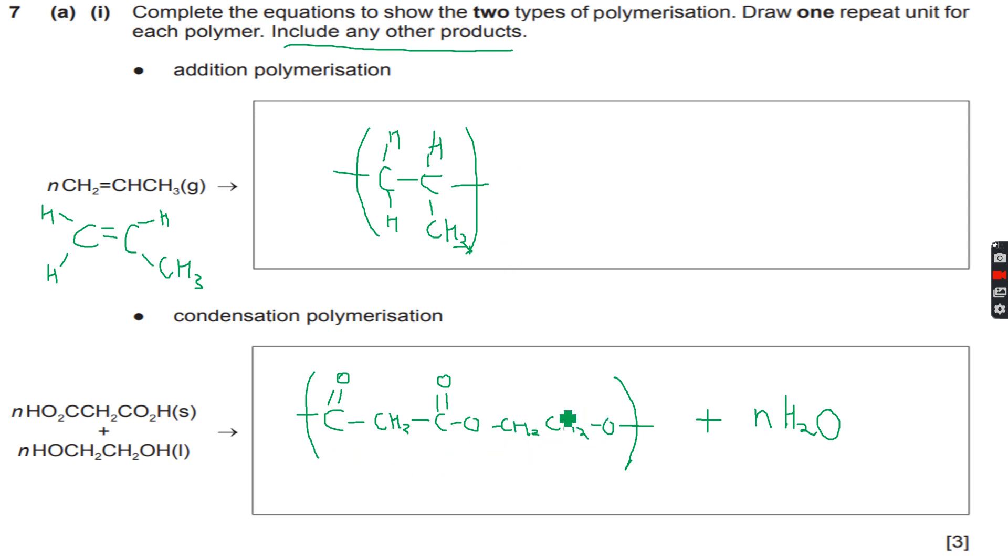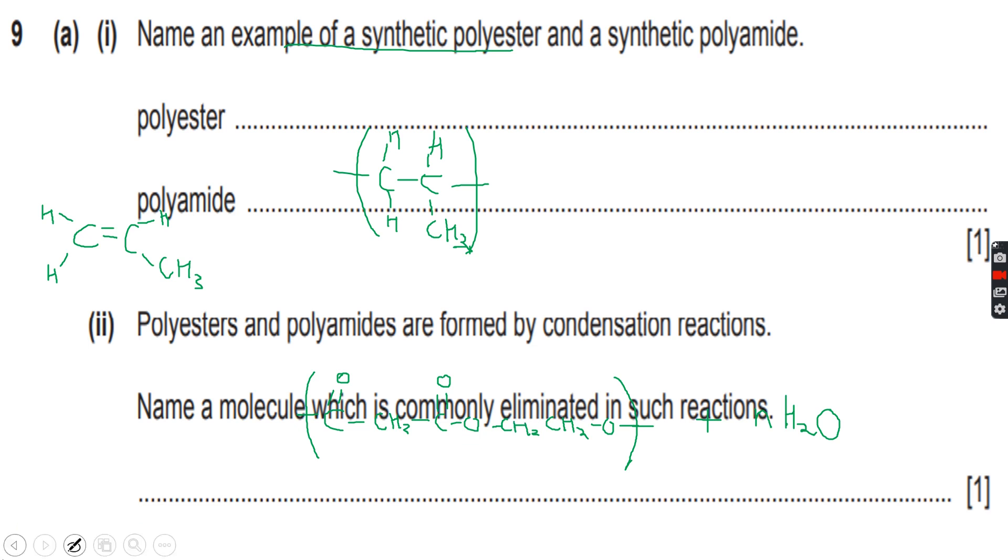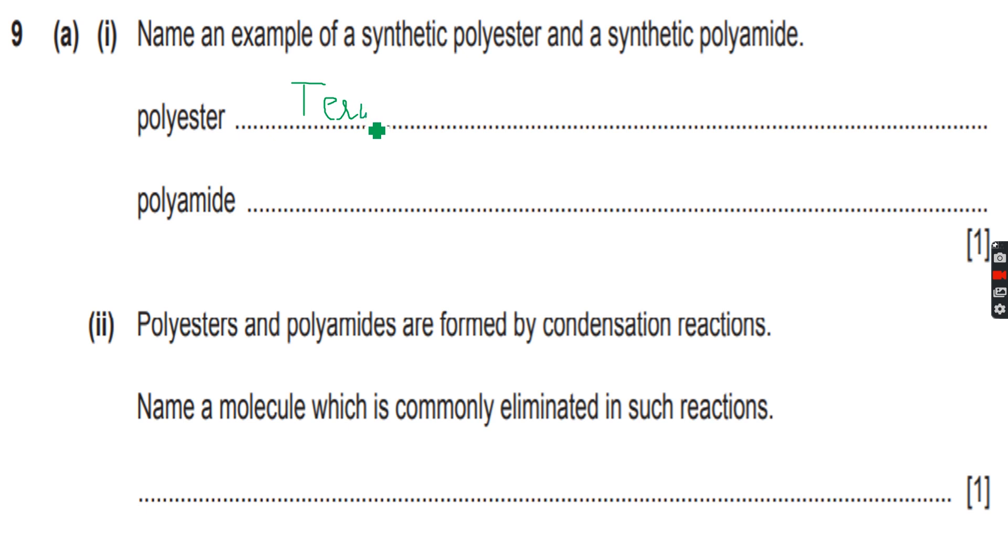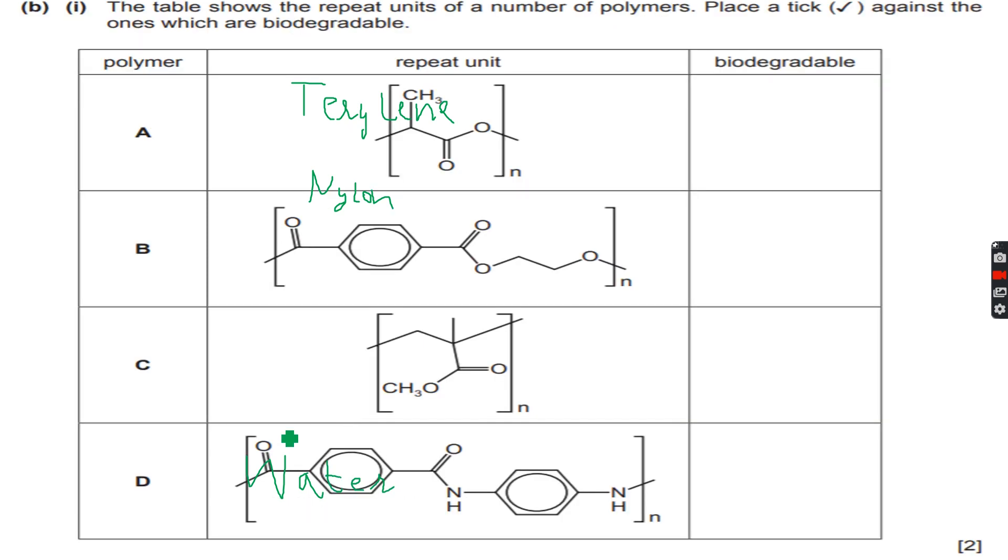Now we have another question: name an example of a synthetic polyester and a synthetic polyamide. A polyester we know is terylene. I told you to remember the name terylene. And polyamide is nylon. Polyester and polyamides are formed by condensation reaction. Name a molecule which is commonly eliminated in such reactions: water. We just saw that water is commonly eliminated.